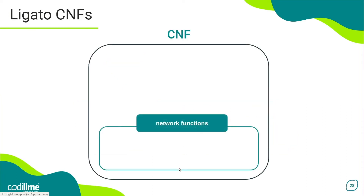Each CNF built using the Legato platform is supposed to offer a number of network functions. The maximum set of these functions is determined by the Vector Packet Processor (VPP) capabilities, since this is the main data plane considered in Legato. Additionally, if there is such a need, you can also make use of native Linux network functionality.